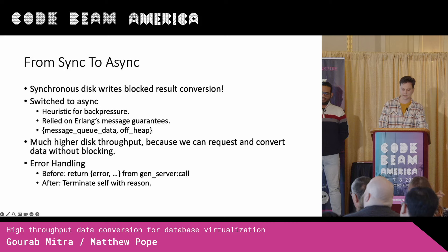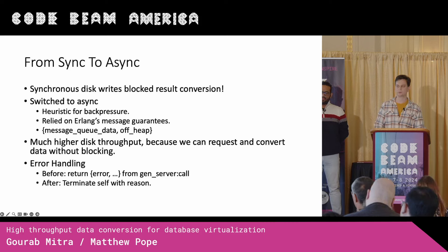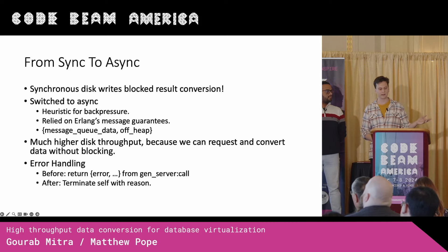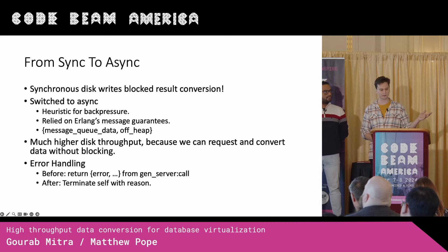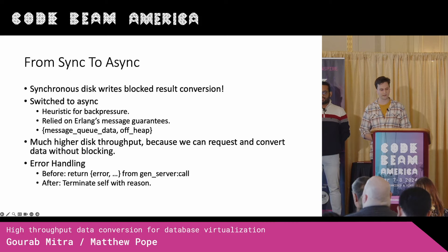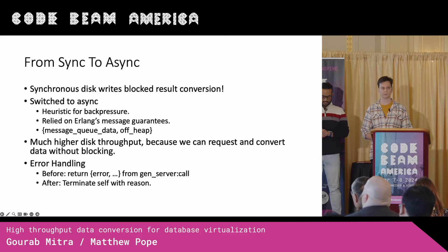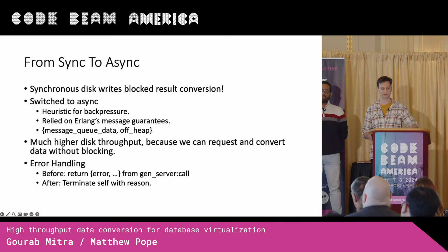We also relied on off-heap message queues to prevent overwhelming the heap, in a very similar way to what we saw in the result converters. Queuing messages off the heap has some overhead, but the level of protection it provides is worth it. This resulted in much higher disk throughput. It also had the effect of speeding up the result conversion process in total because we're able to fetch results faster and convert them without blocking.